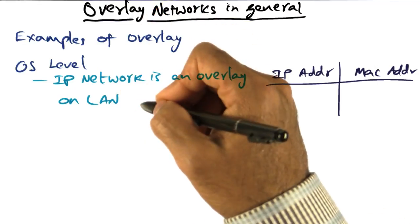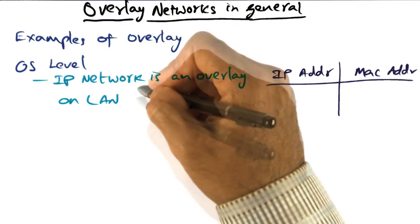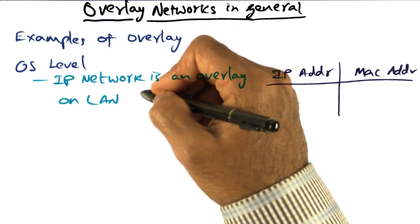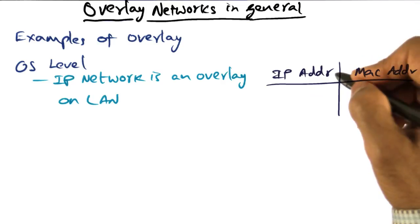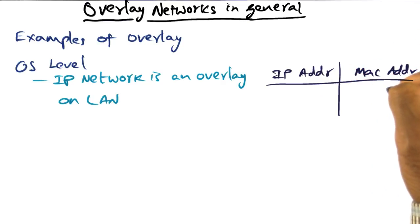At the OS level, when you send a message using TCP IP, that message, if it is being delivered to your buddy who happens to be on the same local area network, is actually getting converted to a MAC address so that it can traverse the local area network and get to the desired destination.